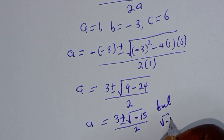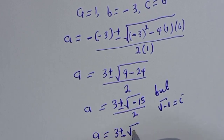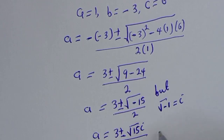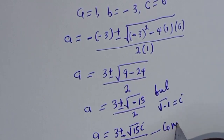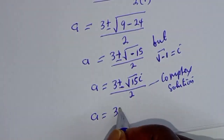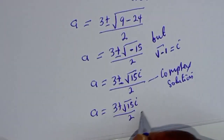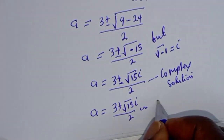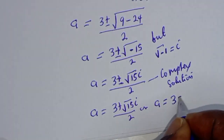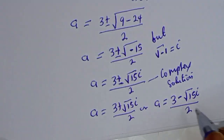Since the square root of minus 1 equals i, we have a equals (3 plus or minus square root of 15 times i) over 2. This is a complex solution: a equals (3 plus root 15 i) over 2 or a equals (3 minus root 15 i) over 2.